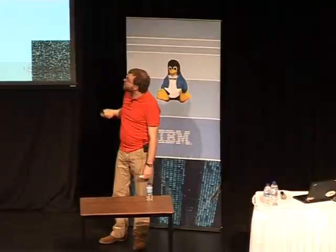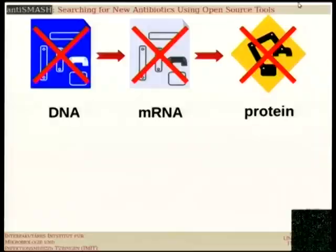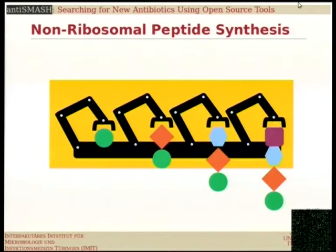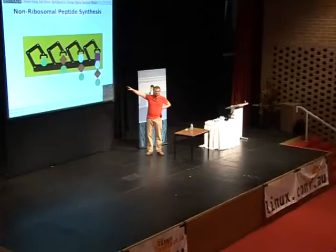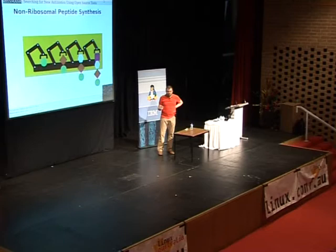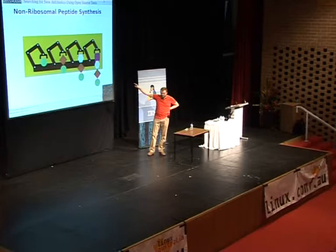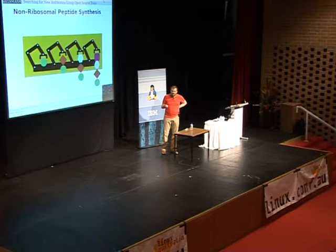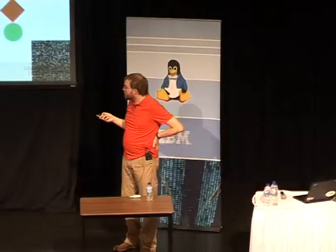Now let me get to the one exception where the central dogma doesn't work: non-ribosomal peptide synthesis. Instead of going through the mRNA/ribosome pathway, you build a huge factory enzyme that, like a real factory, has different modules that do different steps over and over again — and by this you gradually build up a product, like building up a car. The nice thing about these beasts is that, unlike a ribosome limited to 20 building blocks, you can build these things to use all sorts of modified building blocks. This is where the special Legos come in — these are really interesting in the area of antibiotics, and that's basically one of the fortes of our software.